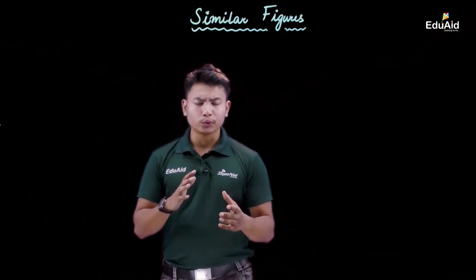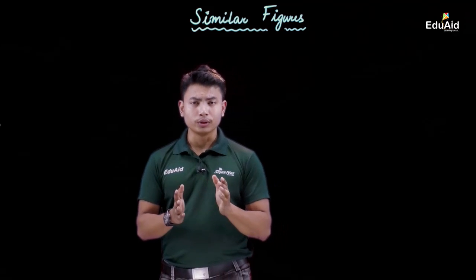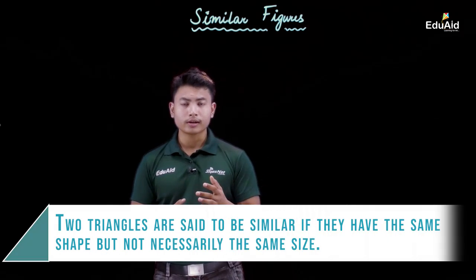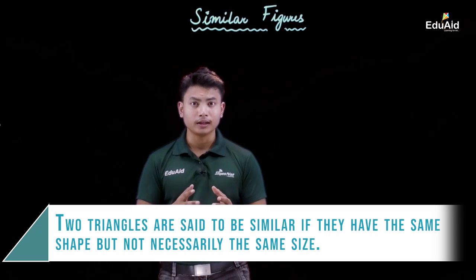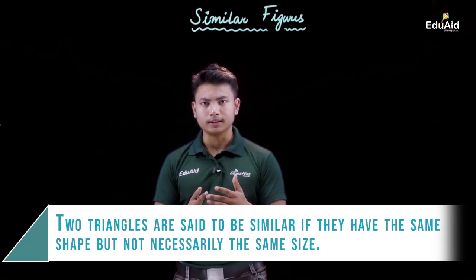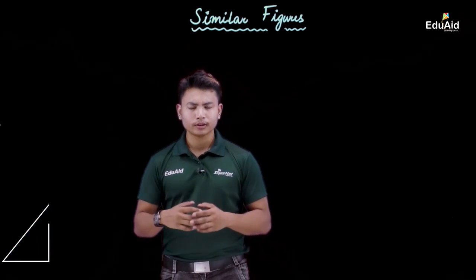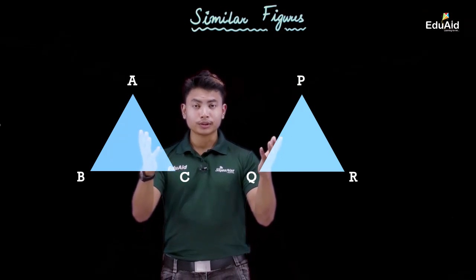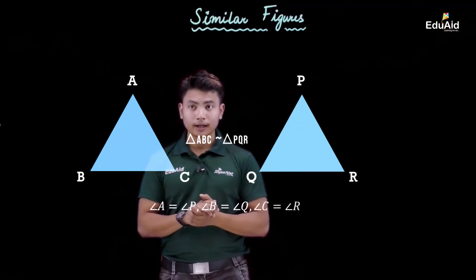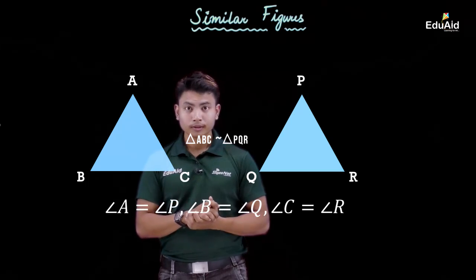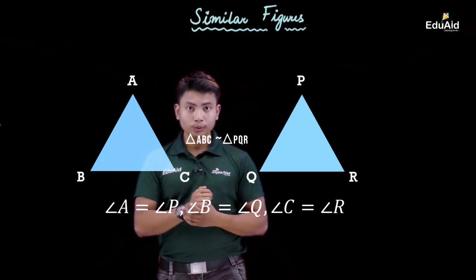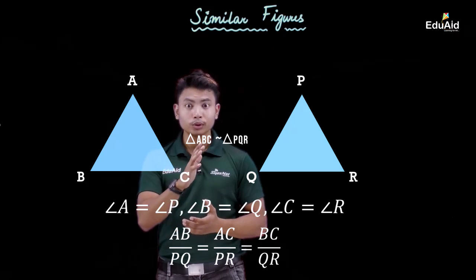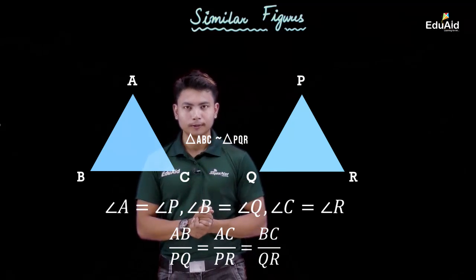In this chapter we will discuss only one particular figure — the triangle. Two triangles are said to be similar if they have the same shape but not necessarily the same size. Let's consider two triangles ABC and PQR. These two triangles are similar if angle A equals angle P, angle B equals angle Q, angle C equals angle R, and AB/PQ equals AC/PR equals BC/QR.